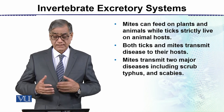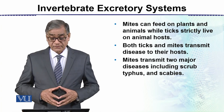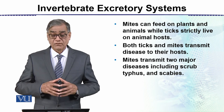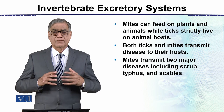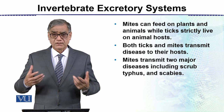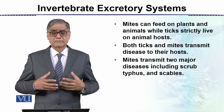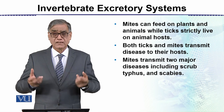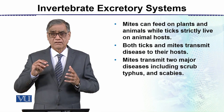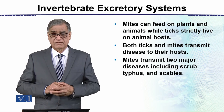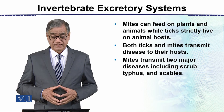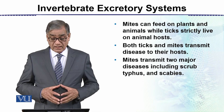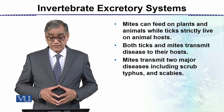Mites can feed on plants and animals, while ticks strictly live on animal hosts. For example, birds kept as pets at home sometimes have certain insects clinging under their wings, sucking blood — those are ticks. Both ticks and mites transmit diseases, and they are also found on mammals, cattle, and goats, particularly in areas of soft skin or hiding places on the body such as between the legs.